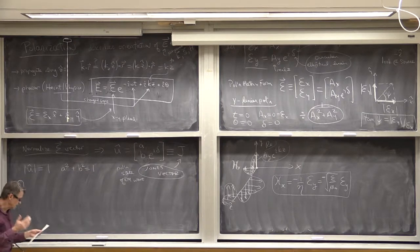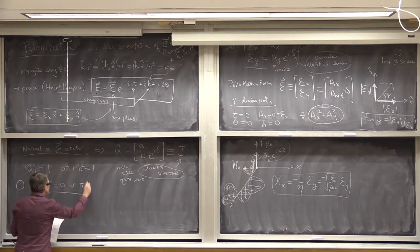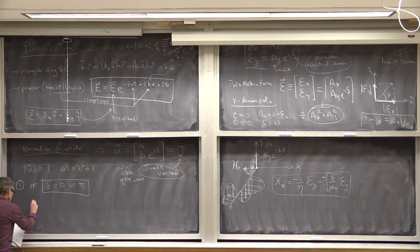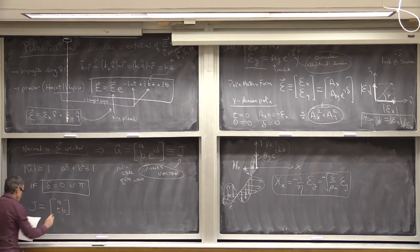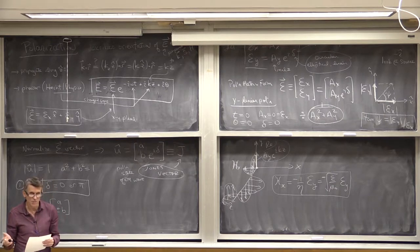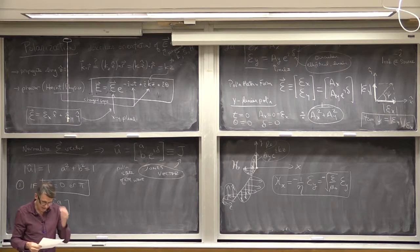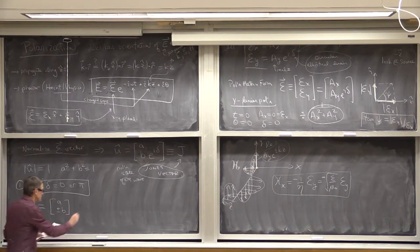Now I'm going to describe the different states of polarization. Consider delta equal to zero or pi — what does this imply? The Jones matrix will be A plus or minus B. A is the length of the electric field in X, B is the relative length of electric field along Y. With plus or minus, there's no phase delay, so this actually defines a linear polarization.